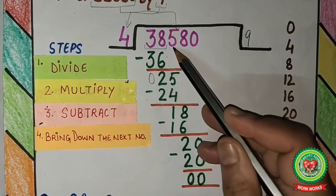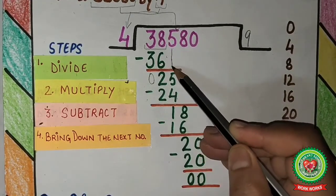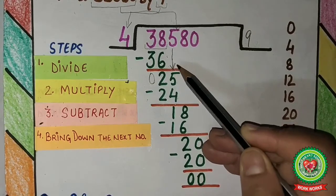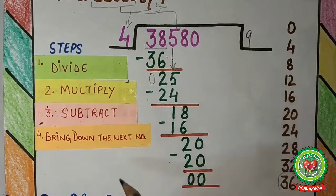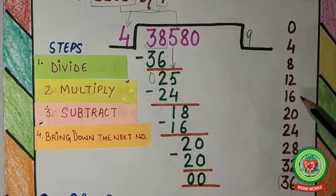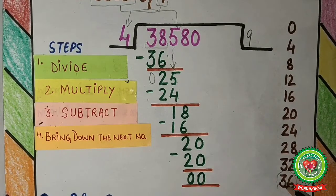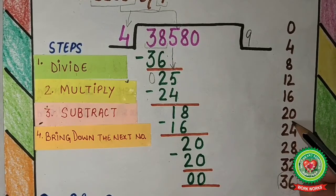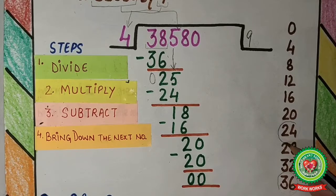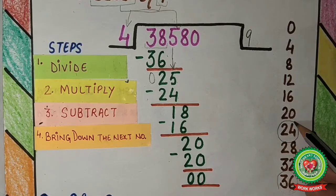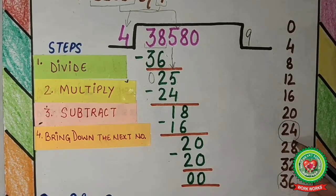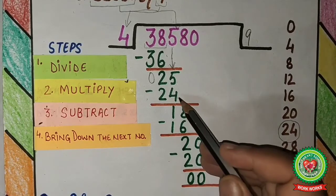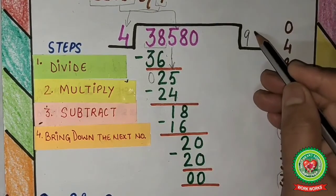The third step is subtract: 8 minus 6 is 2, and 3 minus 3 is 0. The fourth step is bring down the next number. The next number is 5, so bringing it down gives us 25. 25 does not appear in the table of 4, so we need the number just less than 25 that is a multiple of 4. That is 24. 4 times 6 is 24. So 24 comes here and 6 comes up.